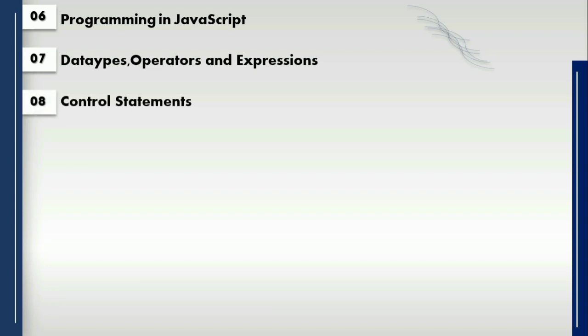Control statements — we are having loops: for loop, while loop, do-while loop — everything we are going to see in this control statements section. Then functions — how to return a function, how to pass arguments, how to pass parameters — everything we are going to see in this functions section.